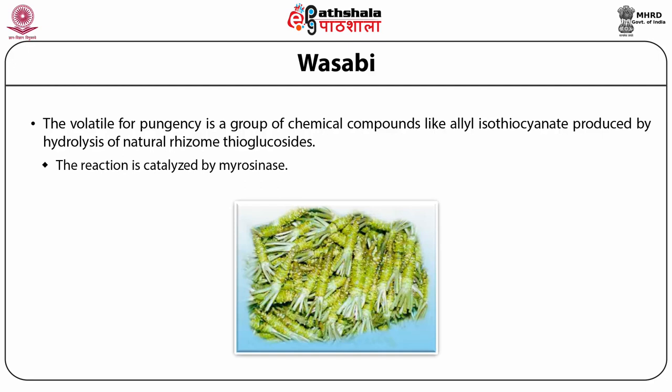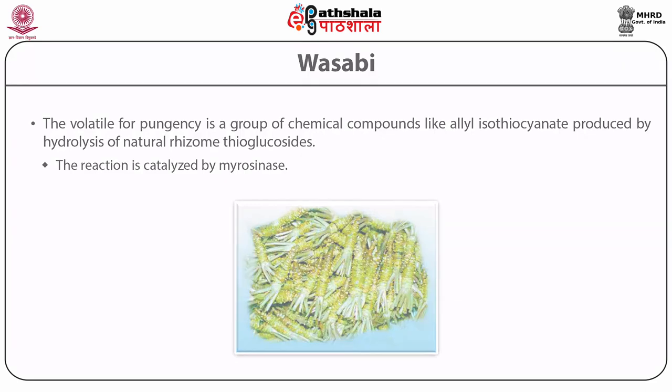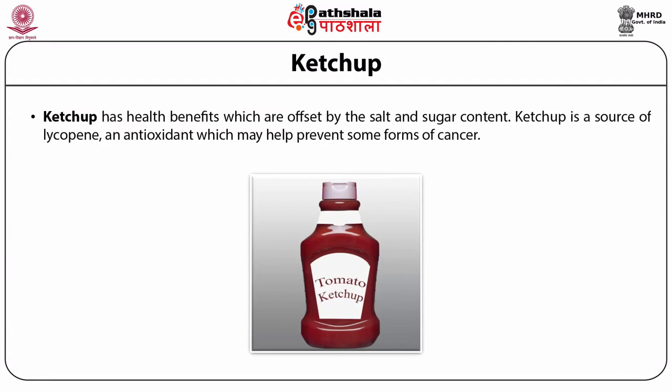The volatile pungency of wasabi is a group of chemical compounds like allyl isothiocyanate produced by hydrolysis of natural rhizome thioglucosides, and the reaction is catalyzed by myrosinase. 100 grams of wasabi root contains 109 kilocalories, fat 0.63g, carbohydrates 23g, fiber 7.8g, and proteins 4.6g.